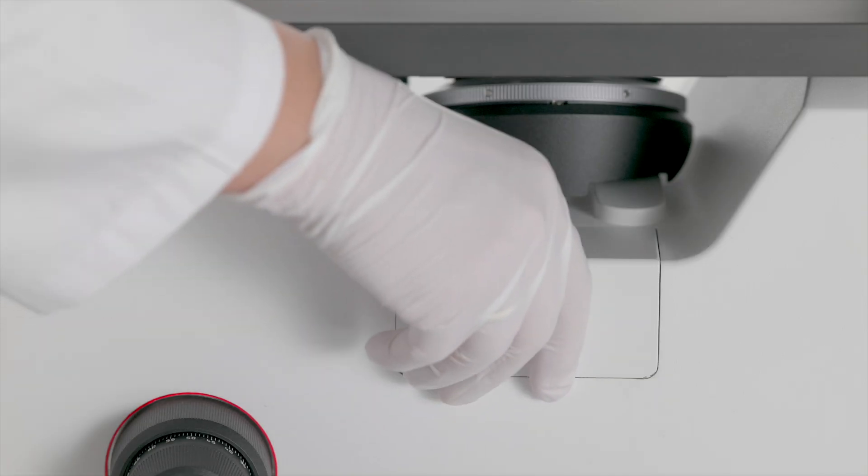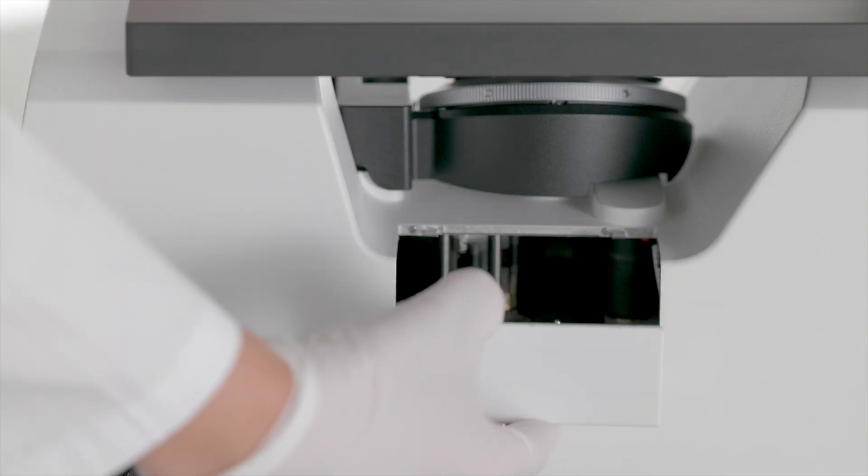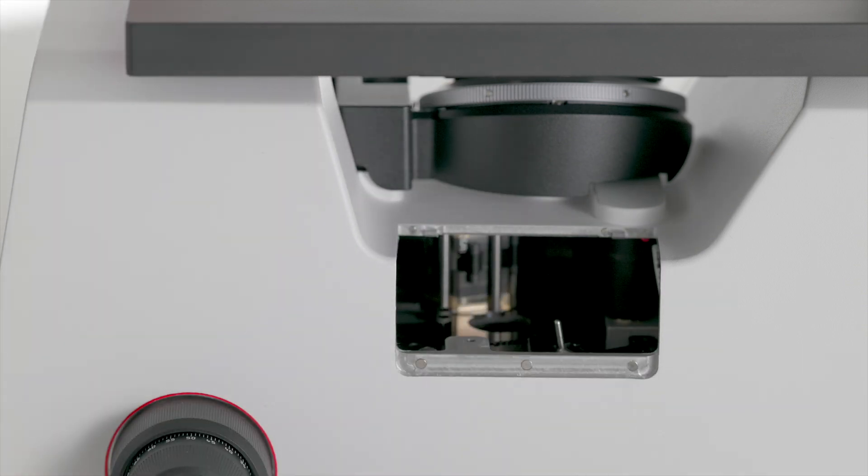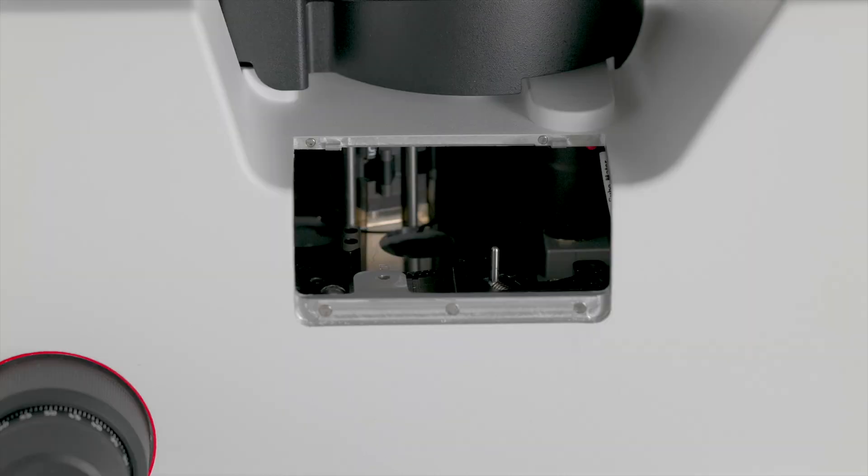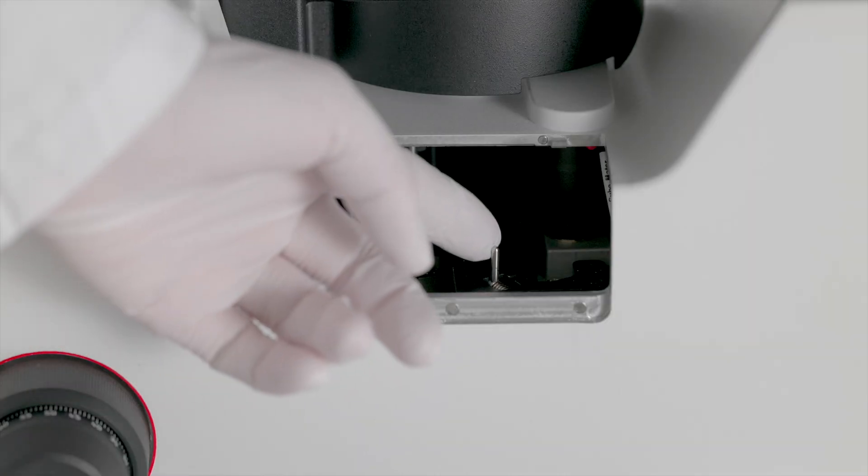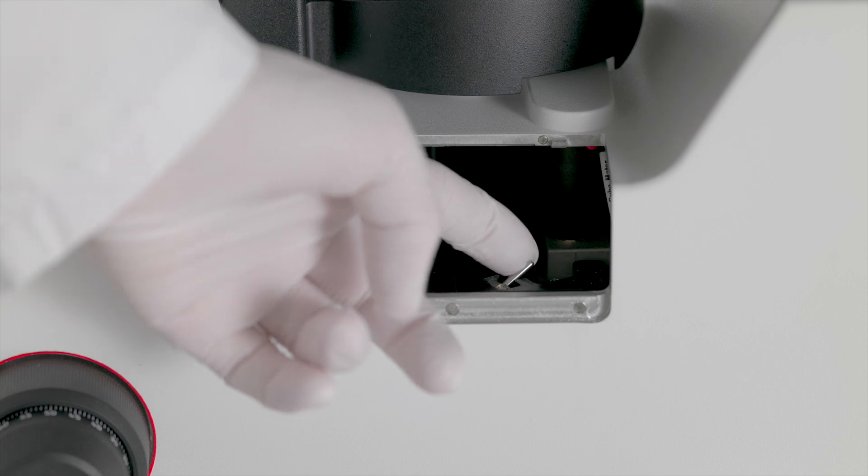To install the filter cubes, first open the magnetic door of the filter cube chamber, which is located on the right-hand side of Mateo FL. Now pull the locking pin through the gap to securely lock the filter cube turret.